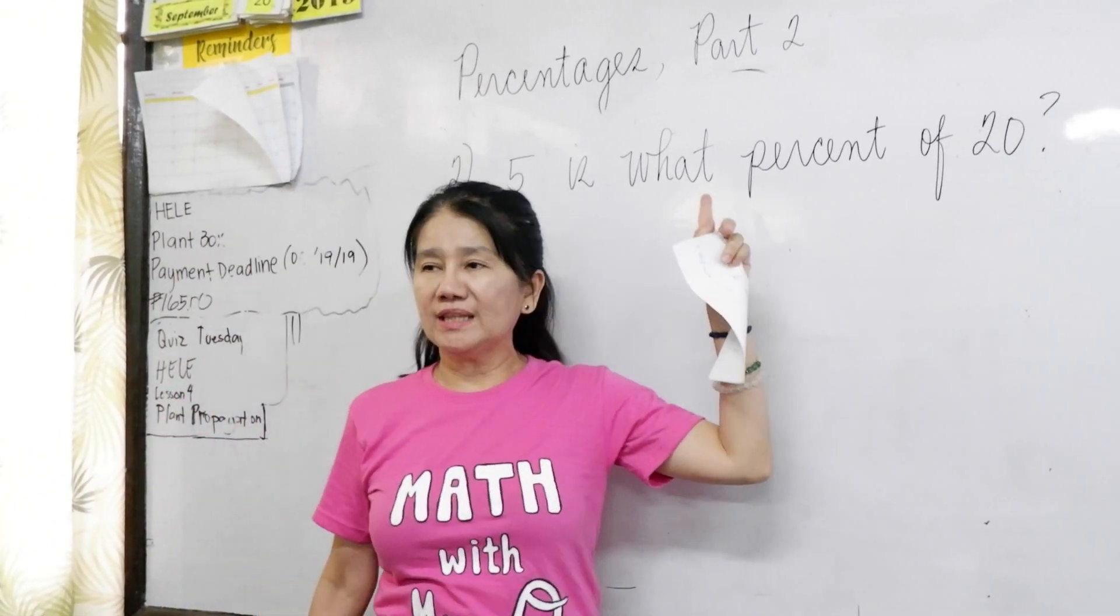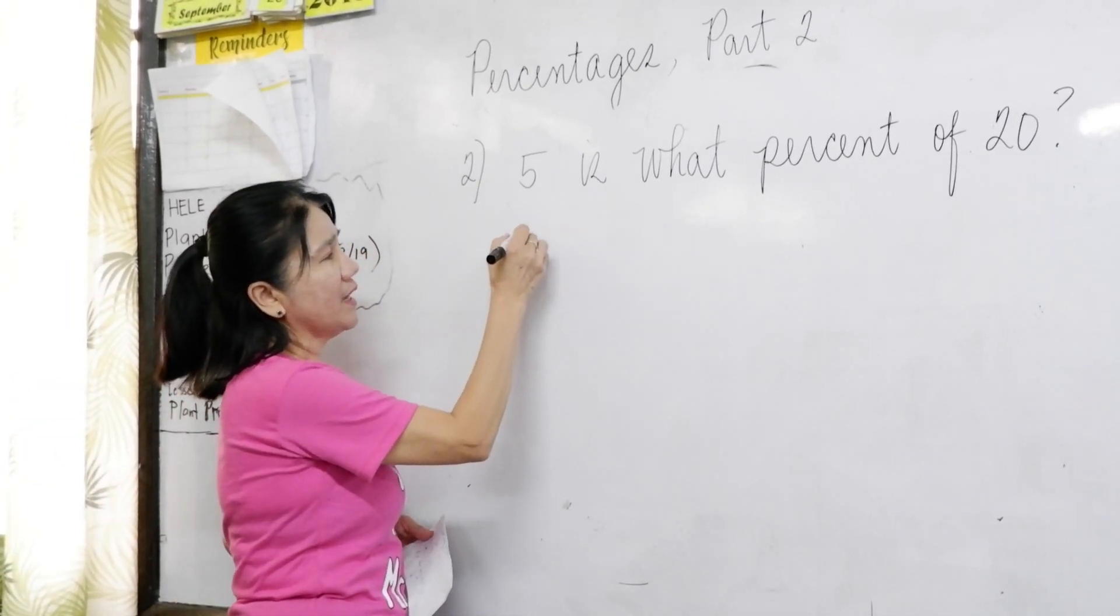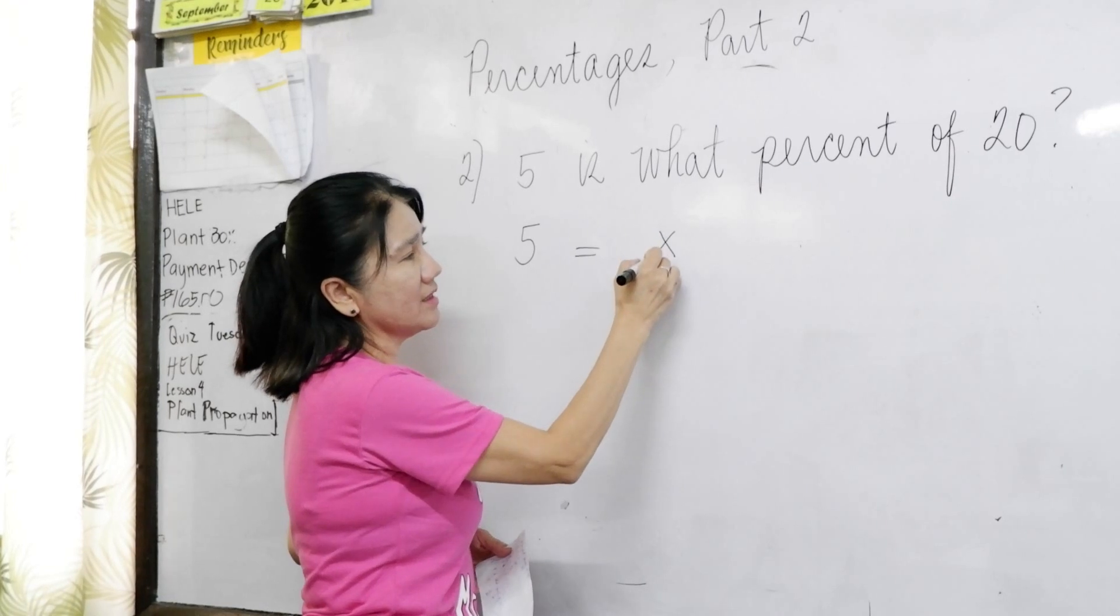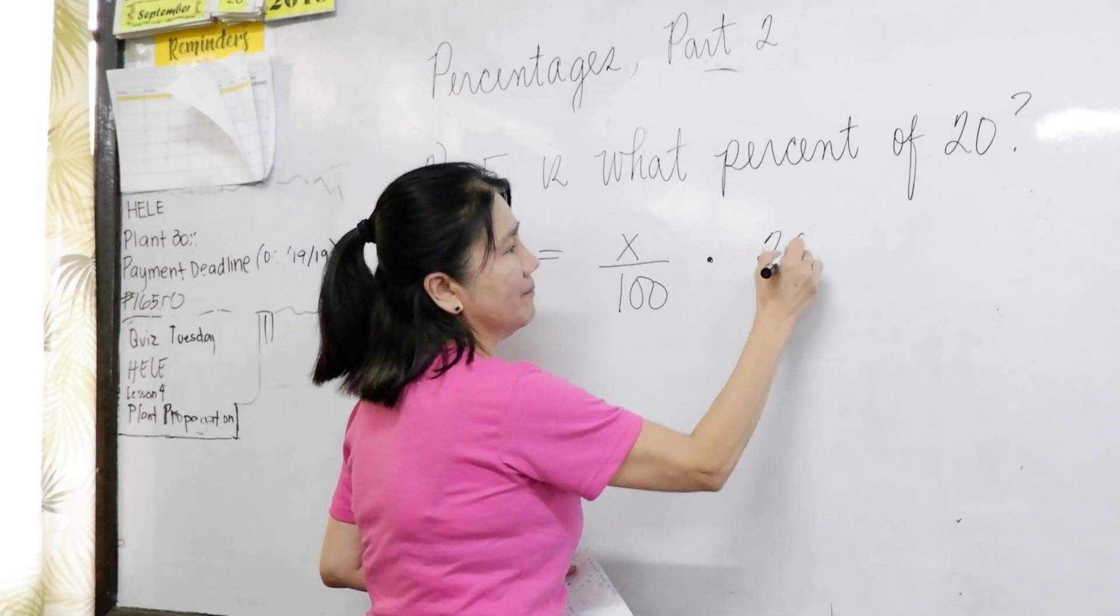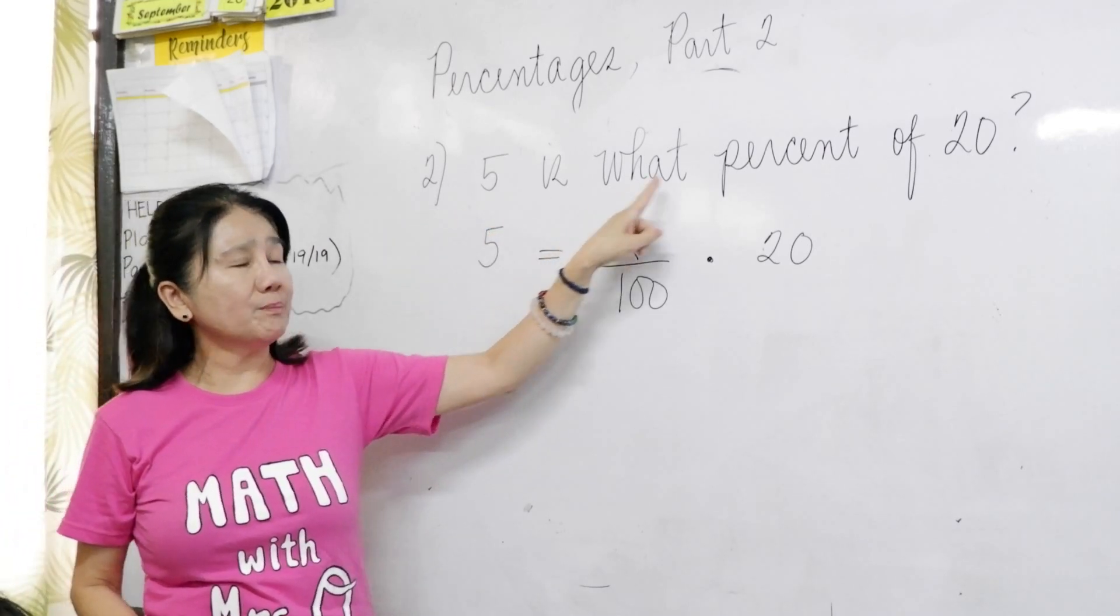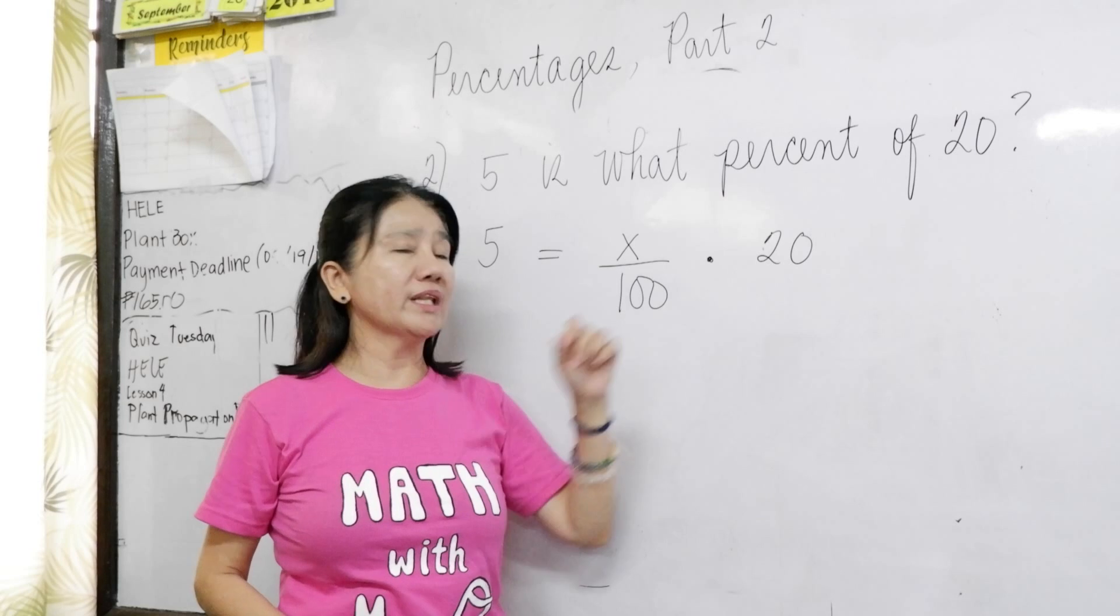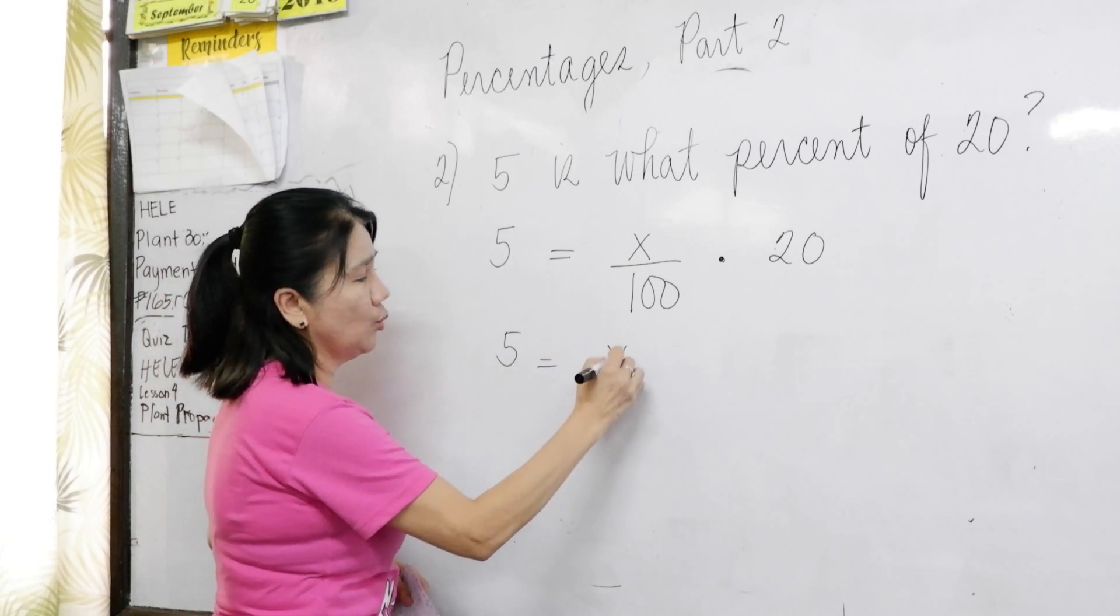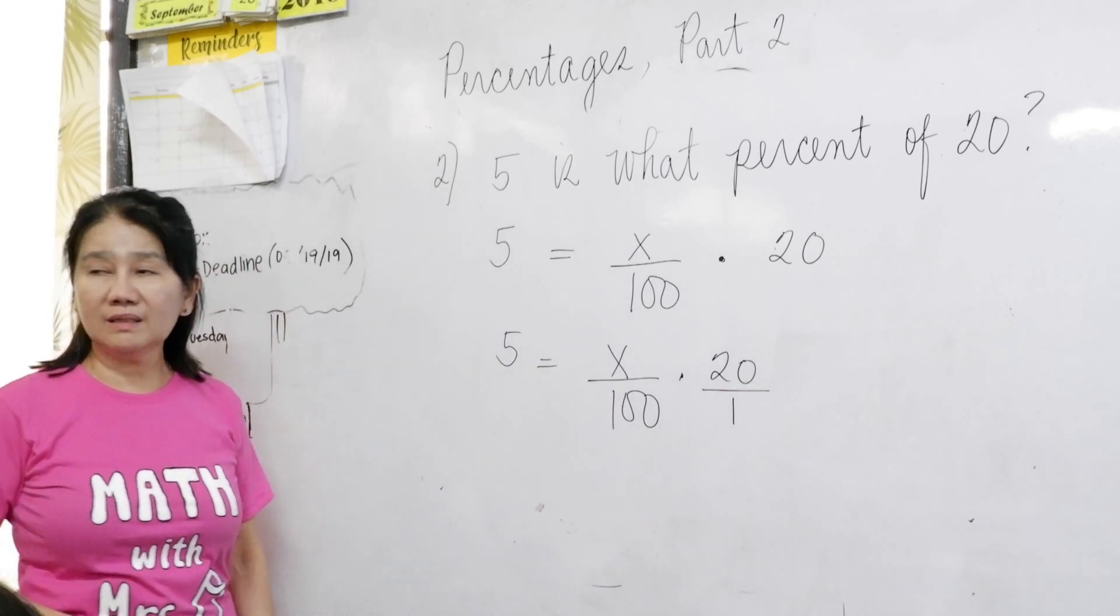Five is what percent of twenty? So, we use a linear equation or simple equations again. Five. So, you just copy five. Is equals what percent? So, what x per cent per hundred. Of times twenty? Twenty. Let me repeat that. Five is equals what percent? So, x per hundred. X per hundred is x per cent of times twenty. So, what do we do here?